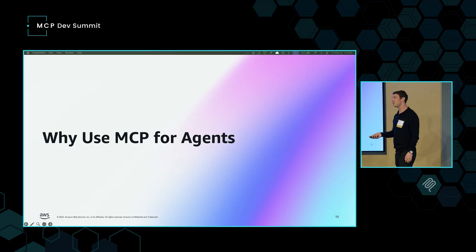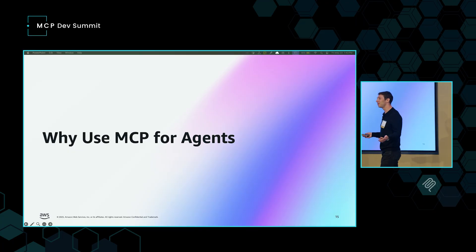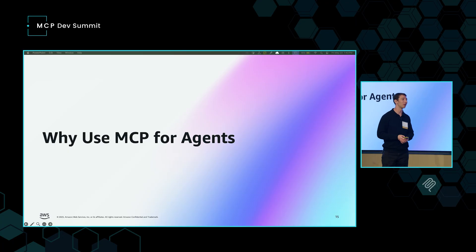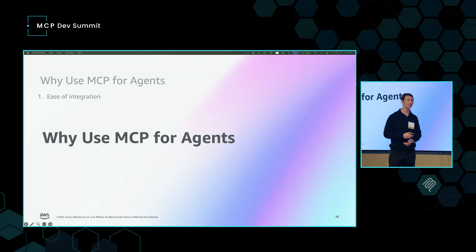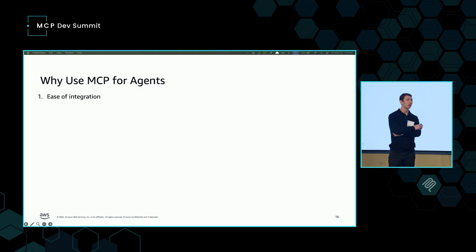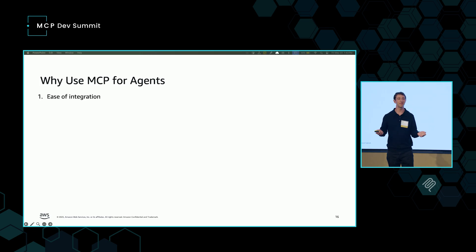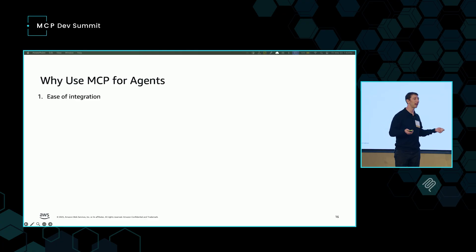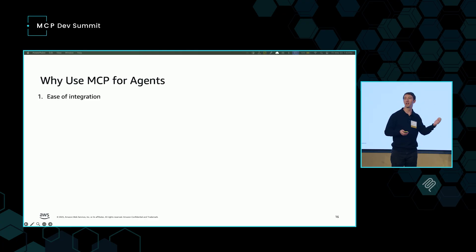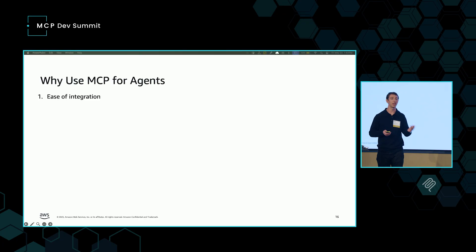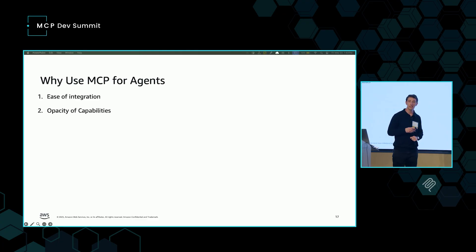Some of you may be asking: why even use MCP for agents? There are other protocols out there. I think the first major reason is ease of integration. I'm building an agent, I integrate tools with MCP, I have other agents in my ecosystem — it's super easy if I can use the exact same protocol to talk to those agents too. I don't have to learn new concepts and new semantics. I can just use MCP, which I've already integrated.